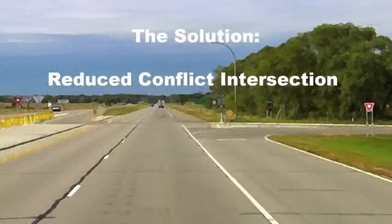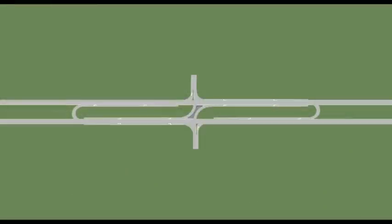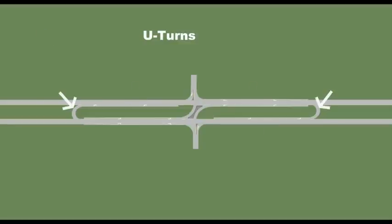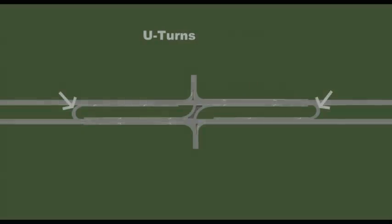The reduced conflict intersection addresses this problem. A reduced conflict intersection consists of raised islands to channelize traffic, special left turn lanes to improve sightlines, and U-turns constructed on each side of the intersection.